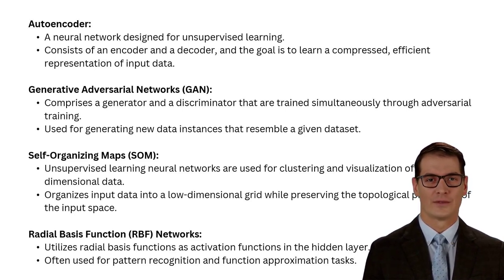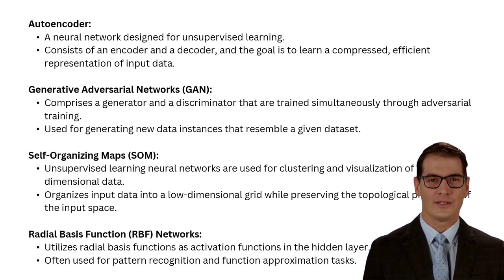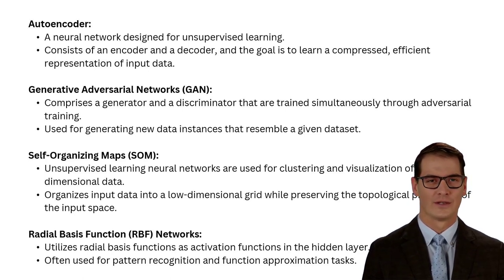Generative adversarial networks are composed of a generator and a discriminator that generate new data that looks like existing datasets. Self-organizing maps are another type of unsupervised learning neural network used to reduce high-dimensional data to a low-dimensional grid while preserving the topology of the input space.